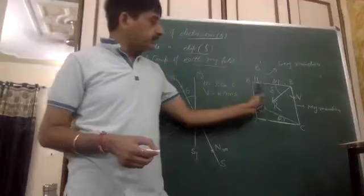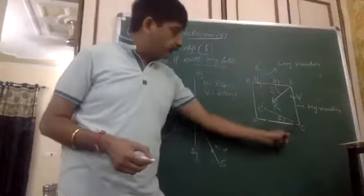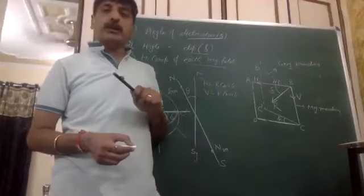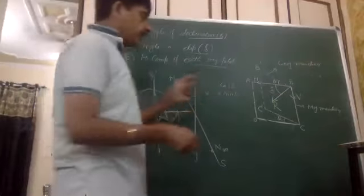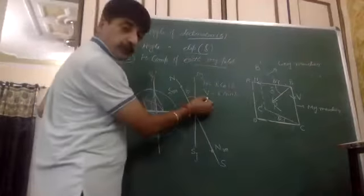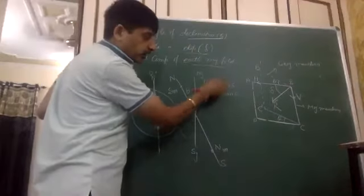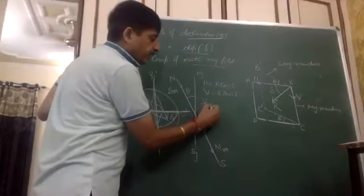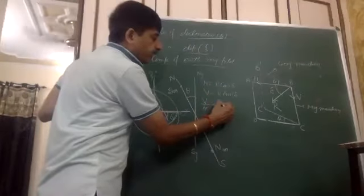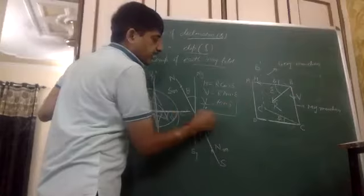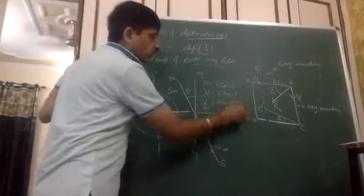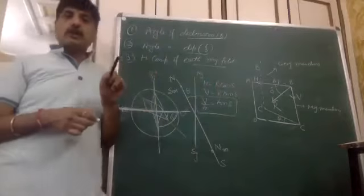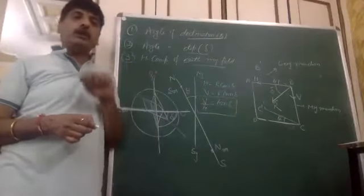The Earth's vertical plane will have two components across it. When we divide each other, the value of V by H gives tan delta. We divide the vertical and horizontal components to get the angle of dip.